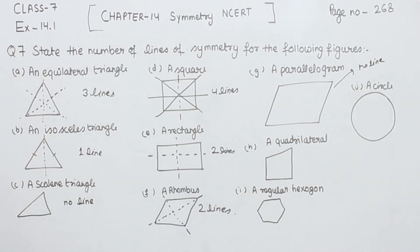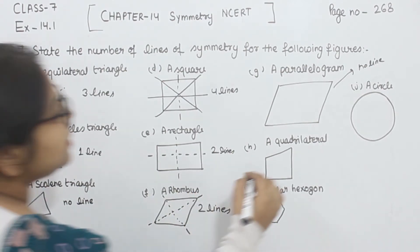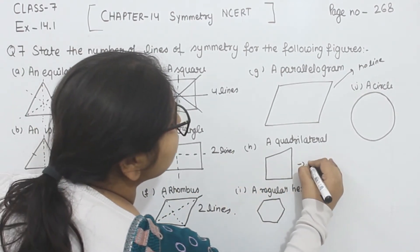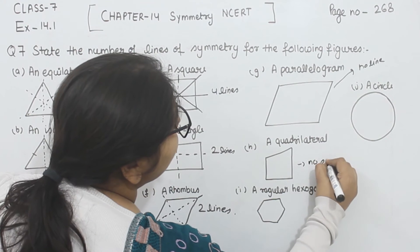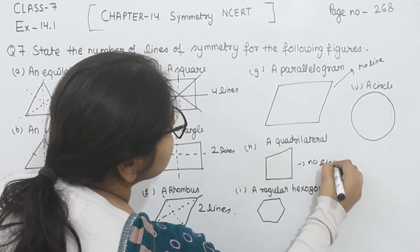Now, comes to the quadrilateral. The same one we are having here — we cannot divide it into two equal parts. So this one also has no line of symmetry.